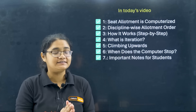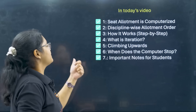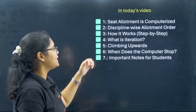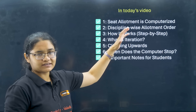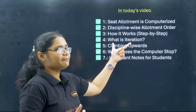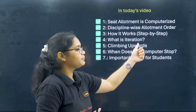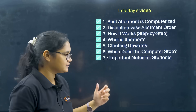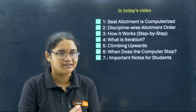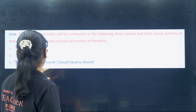In today's video we will be talking about these topics: first, what is seat allotment and is it computerized; then discipline-wise allotment order; what is the order of allotment and how it works step by step; what is iteration; climbing upwards — what does that mean; when does the computer stop allotting seats; and important notes for all students.